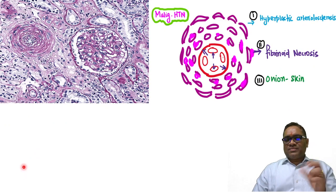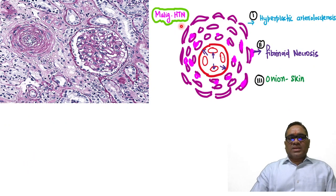When we take the section from these areas, we are going to see the features of malignant hypertension, which are three things. First, hyperplastic arteriosclerosis - you can see there is hyperplasia of the tunica media smooth muscle.